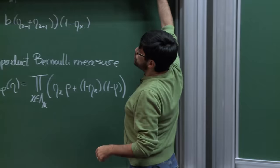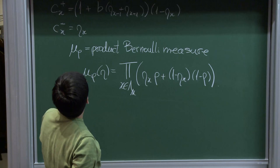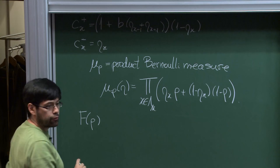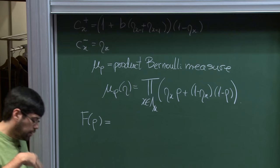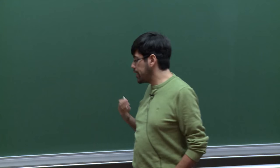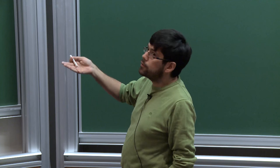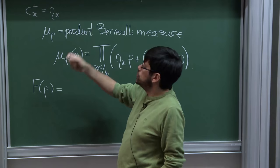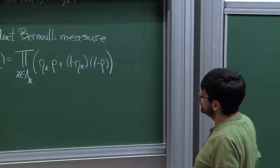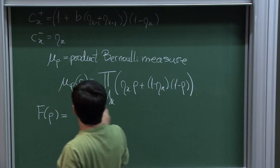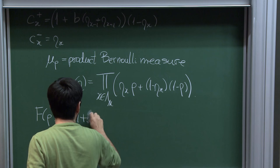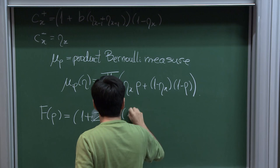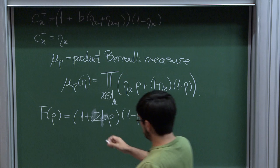Another meaningful quantity is the function f(ρ), the average reaction rate of the system — the average number of particles created minus the number destroyed, with respect to the Bernoulli product measure μ_ρ. So f(ρ) = (1 + 2b·ρ·(1−ρ)) − ρ. A quick observation: f(ρ) = 0 for that particular choice of density ρ.